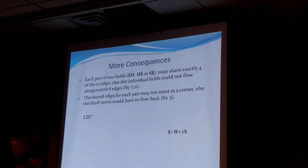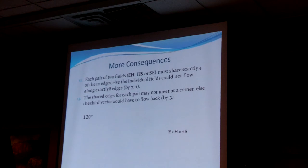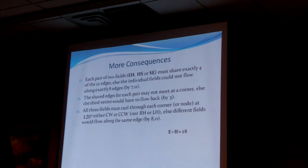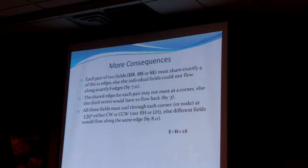The shared edges for each pair cannot meet at a corner, or else the third vector would have to flow back. In other words, if I've got E and H on one edge, I can't have E and H on an adjacent edge connected at a corner, otherwise the third one would be stuck. So all three fields have to curl around each corner at 120-degree angles. They're going to have to go E, H, S in the same order, rotating at 120 degrees.